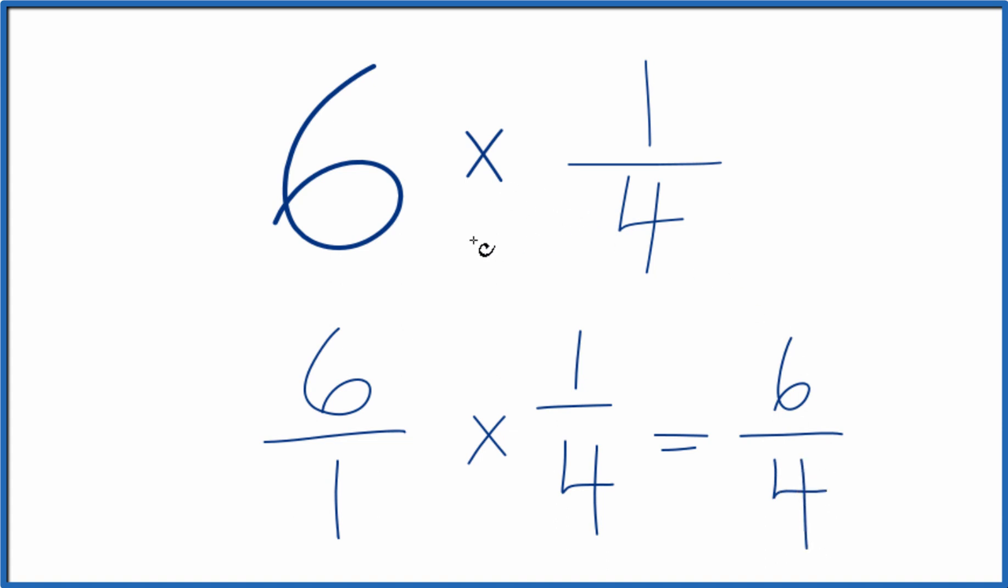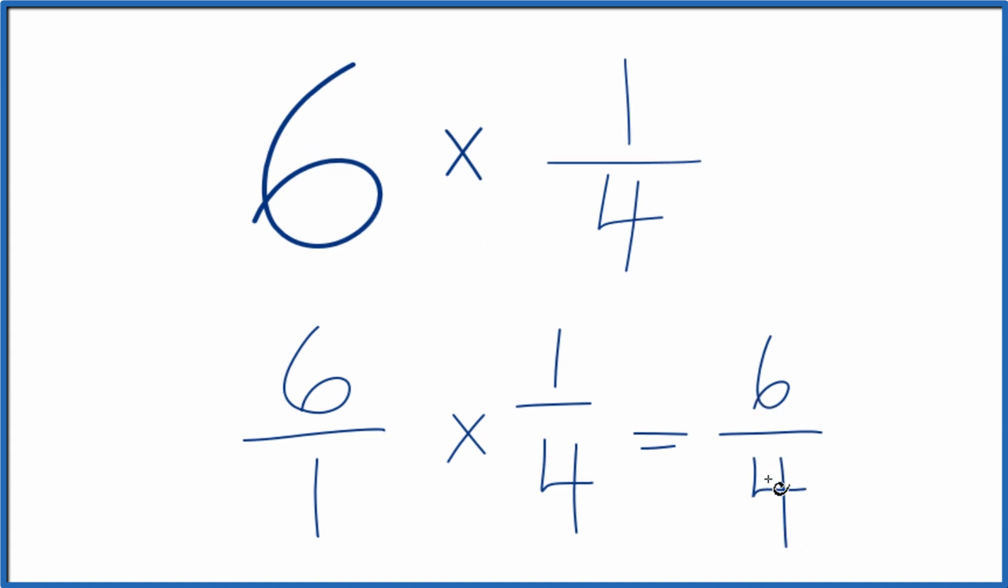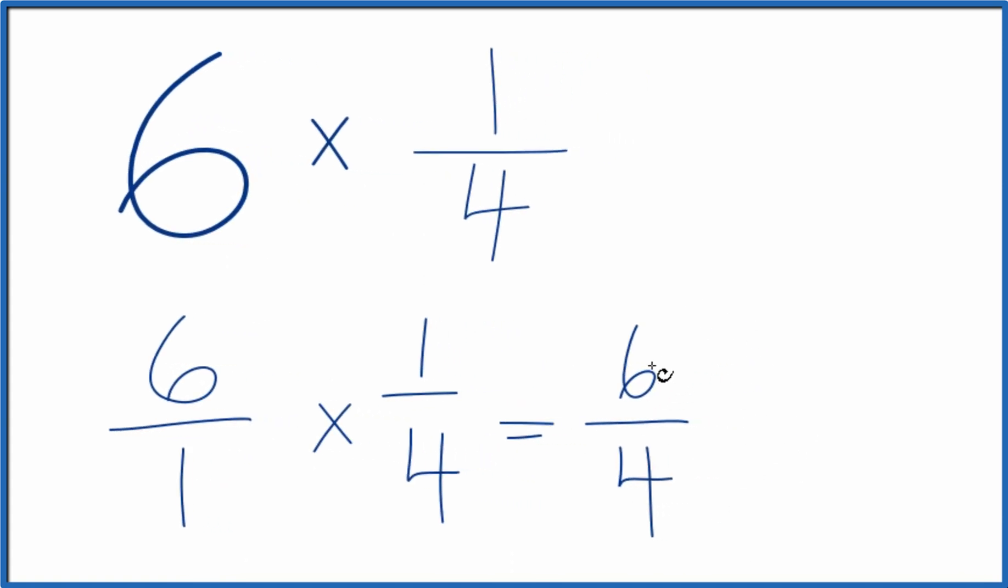So in answer to our question, 6 times 1 fourth, that's 6 fourths. 6 fourths, since these are both even numbers, let's reduce those down. Let's simplify. 6 divided by 2 is 3. 4 divided by 2 is 2. So 6 fourths also equals the fraction 3 over 2.